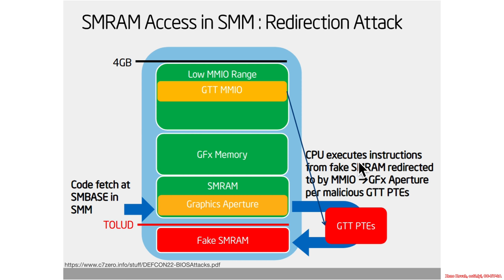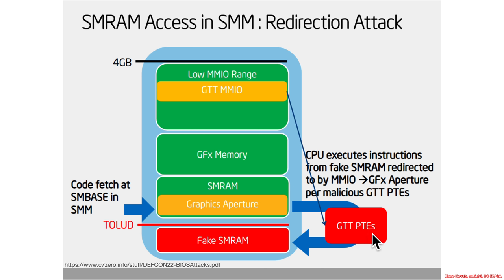In a slightly more detailed picture, relevant in the context of stolen graphics memory and TSEG: there's GTT MMIO, graphics memory, and a graphics aperture. Whereas normally the graphics aperture redirects into graphics memory, it can instead be made to redirect into SMRAM. Consequently, the GTT PTEs — page table entries — can allow for redirection into SMRAM.